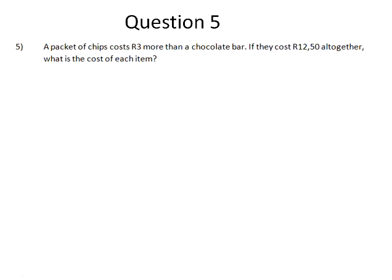And finally, question 5, the word problem. A packet of chips costs 3 rand more than a chocolate bar. If they cost 12 rand 50 altogether, what is the cost of each item? So let's start off by assigning variables to our different things here. So let's let the chips be X rand and the chocolate be Y rand.